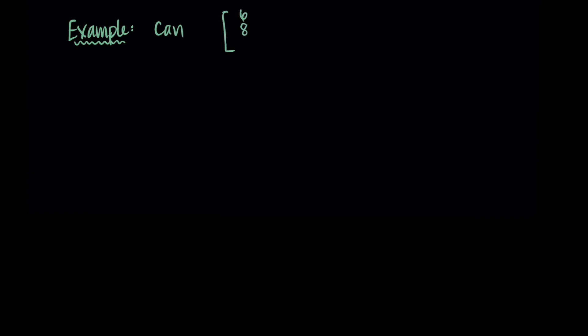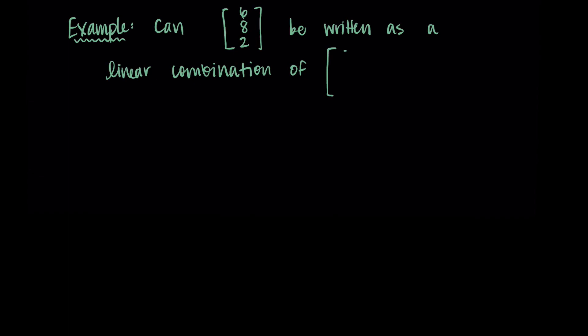Let's ask: can the vector 6, 8, 2 be written as a linear combination of the vectors 5, 1, 3, and 7, negative 2, 6?